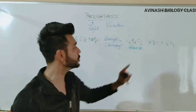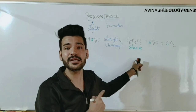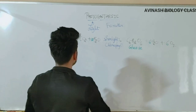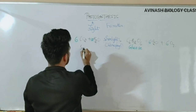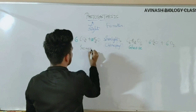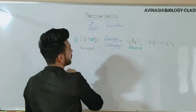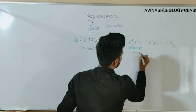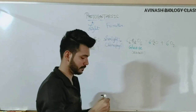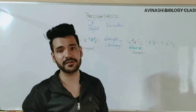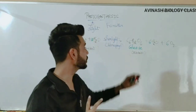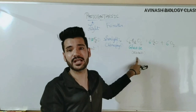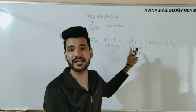आप देख रहे हैं कि जो major organic compound बना वो glucose है, जबकि carbon dioxide और water inorganic थे, और glucose एक organic compound है। याद रखें: sunlight और chlorophyll की presence में ही photosynthesis होगा। Major product जो बना वो glucose है, जो एक organic substance है। Glucose का formula है C6H12O6।